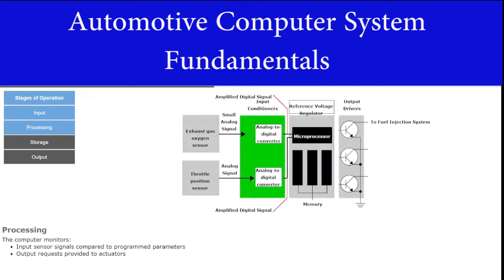The computer monitors input signals and compares them to programmed parameters in order to determine the value of the signal from the input. The computer is then able to process and provide the correct output signals to the actuators. Actuators are devices that perform the actual work requested by the computer.